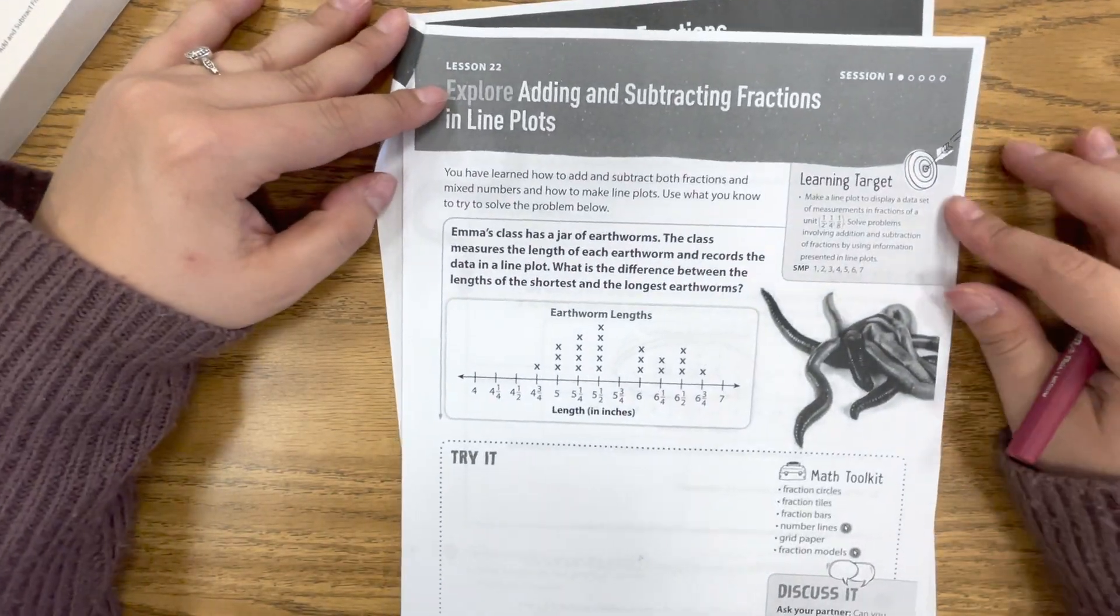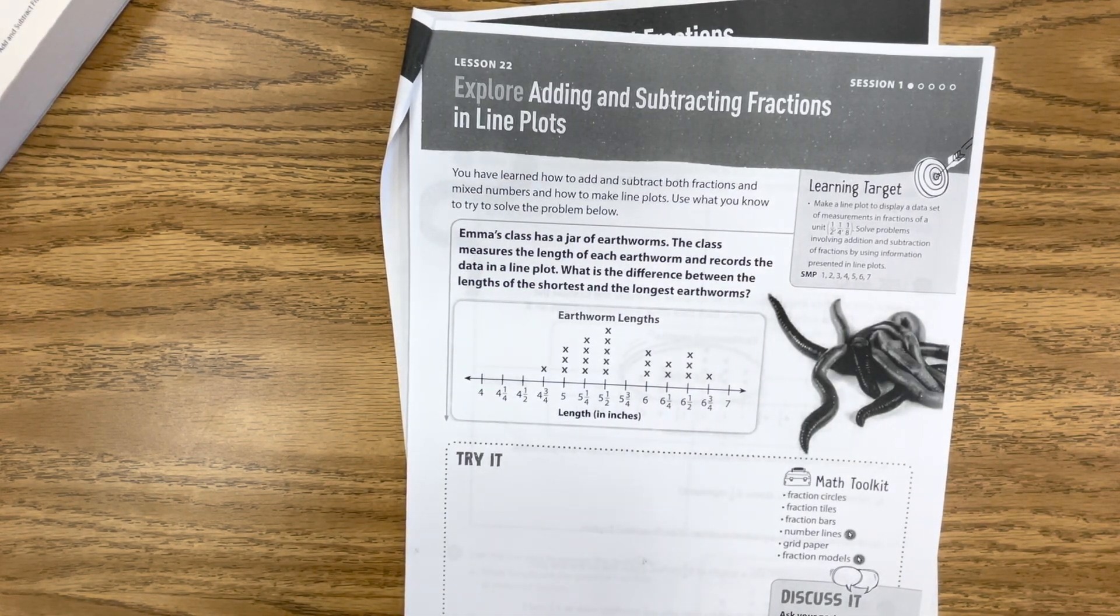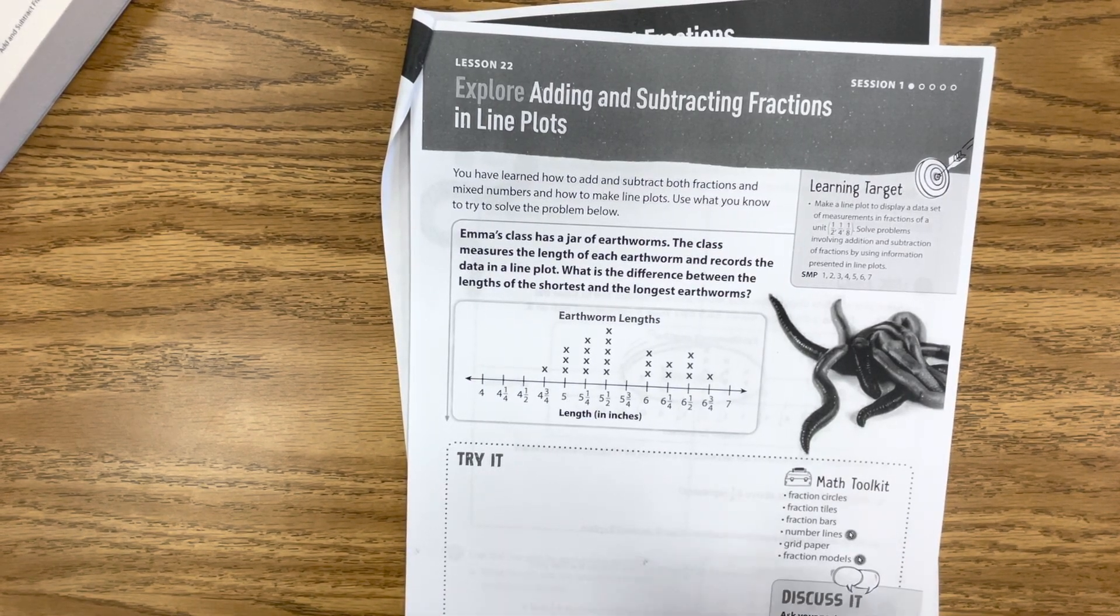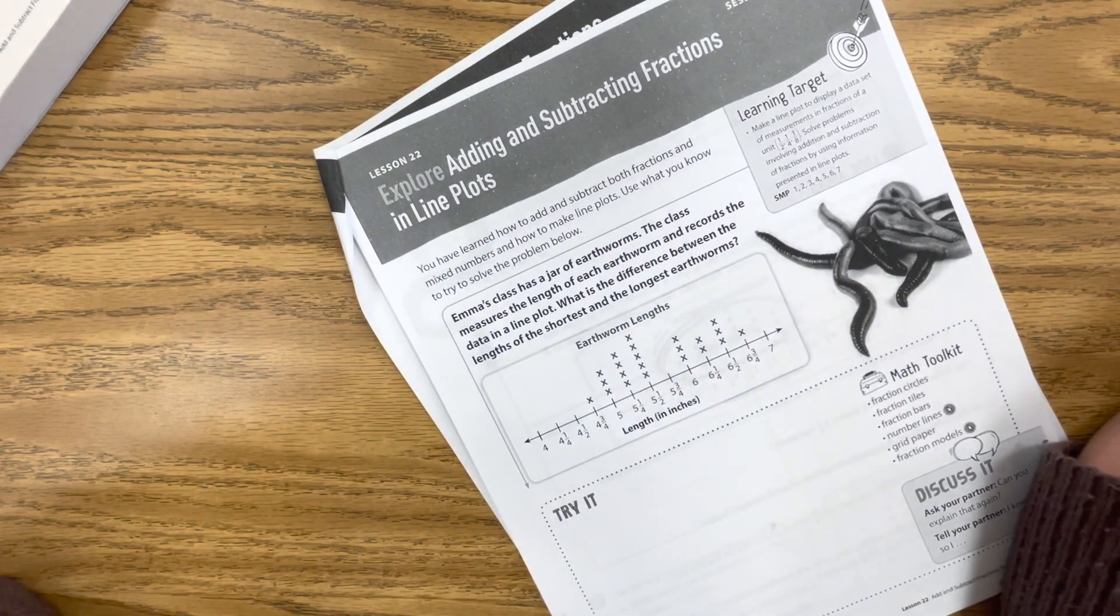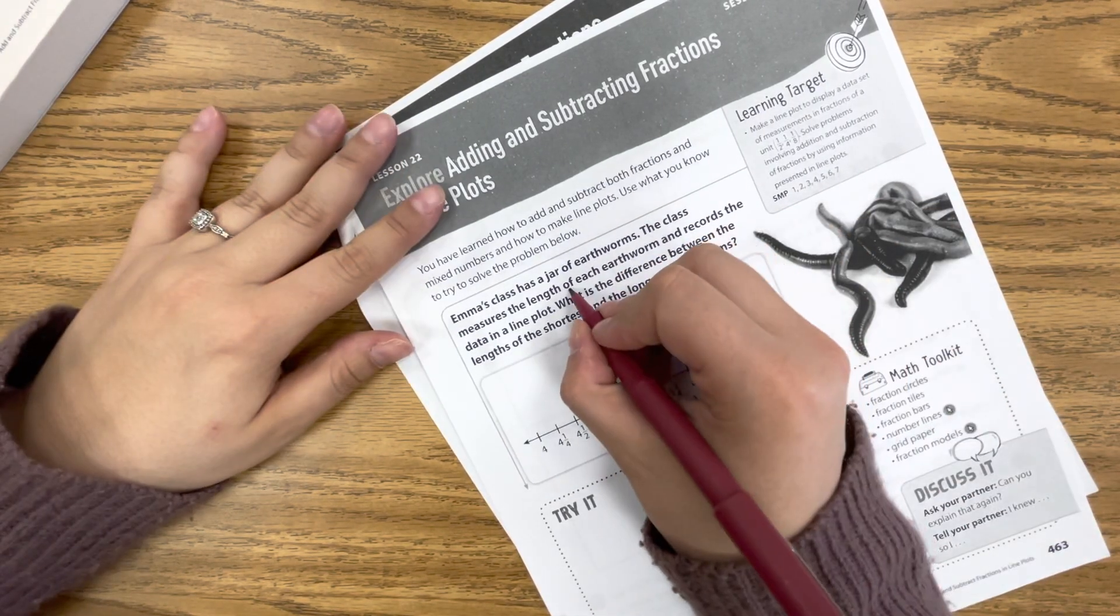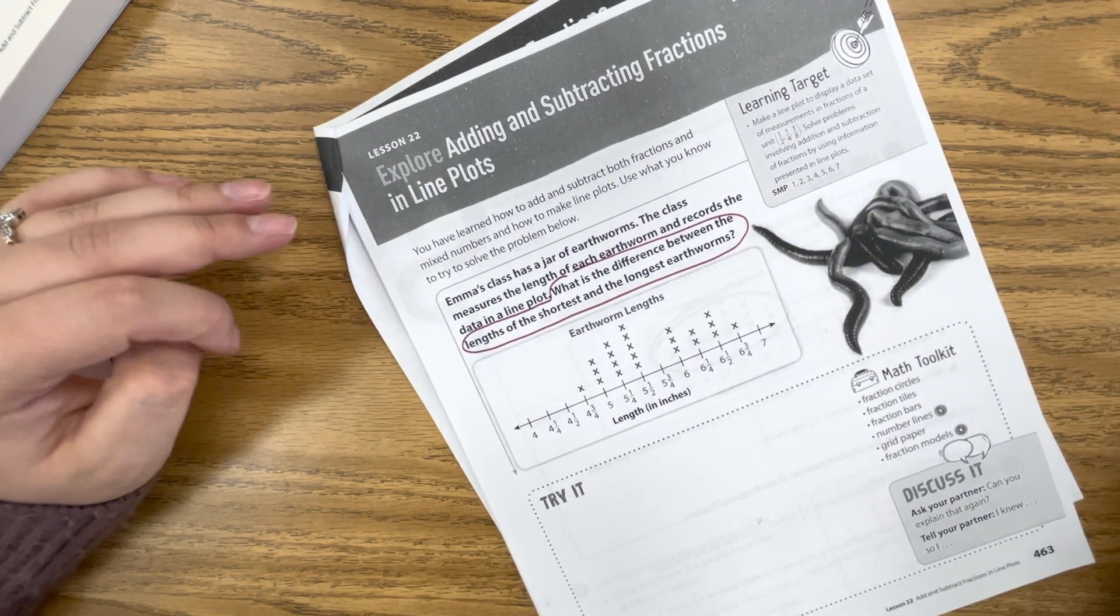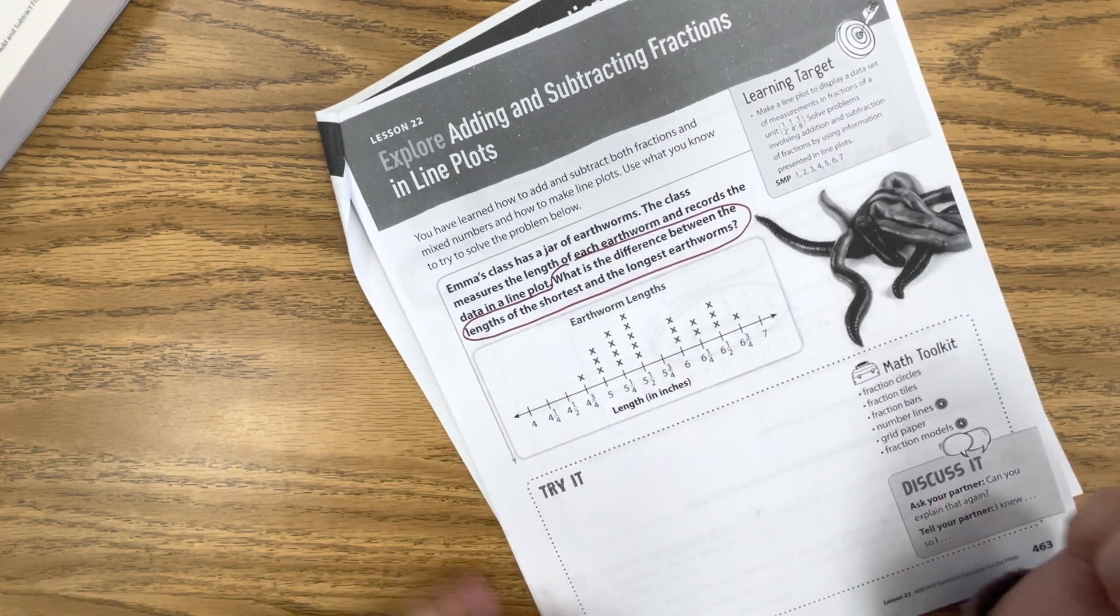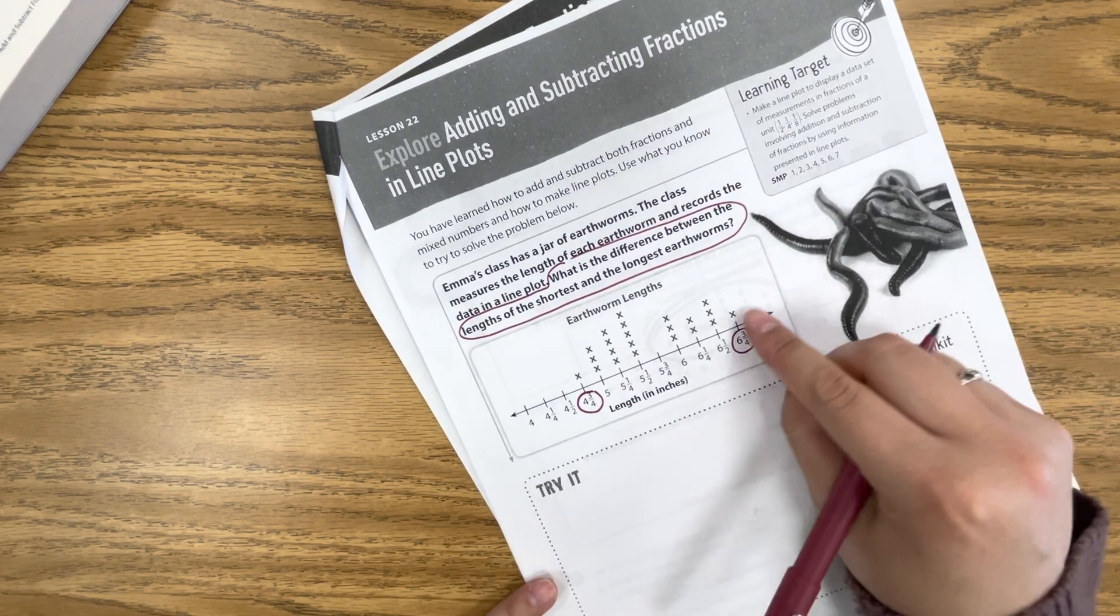So we have learned how to add and subtract both fractions and mixed numbers, and how to make line plots. Use what you know to try and solve the problem below. Emma's class has a jar of earthworms. The class measures the length of each earthworm and records the data in a line plot. What is the difference between the lengths of the shortest and longest earthworms? So if we look at our line plot here, the shortest one we have is 4¾, and then the highest one, or the biggest one we have, is 6¾.